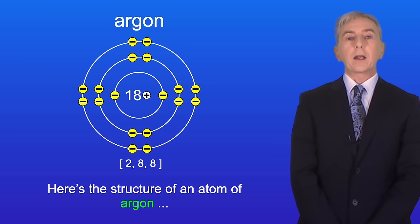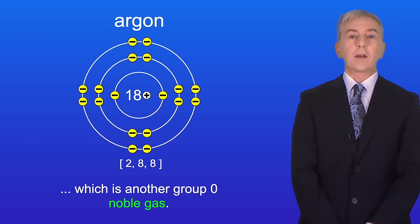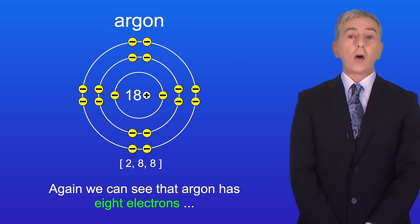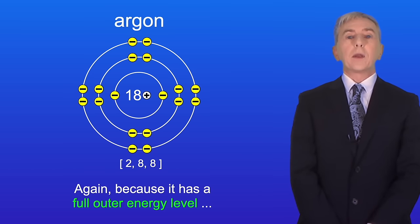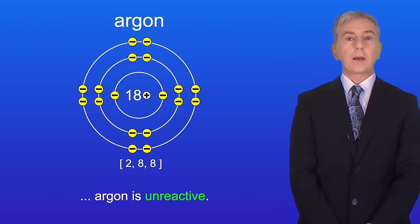Here's the structure of an atom of argon which is another group zero noble gas. Again we can see that argon has eight electrons in its outer energy level. So again because it has a full outer energy level, argon is unreactive.